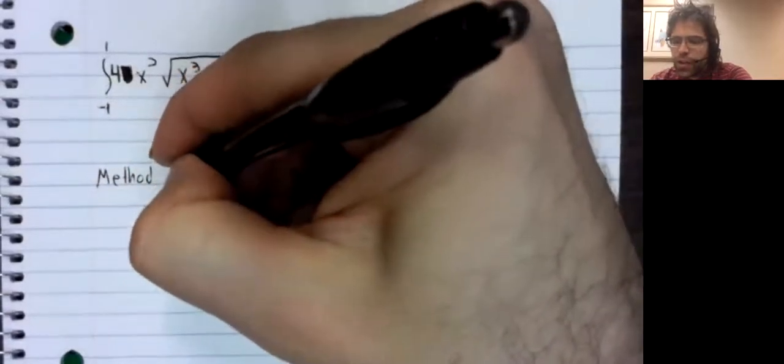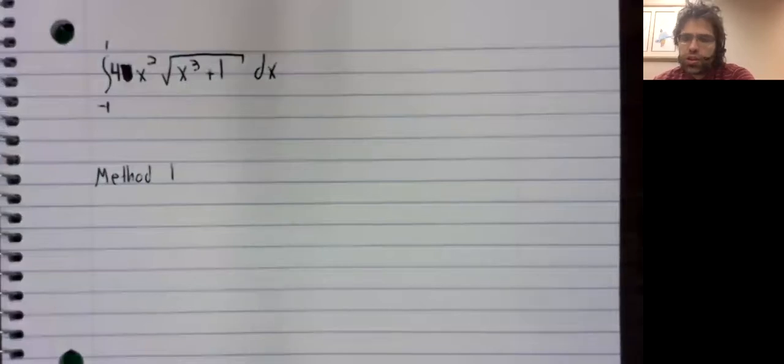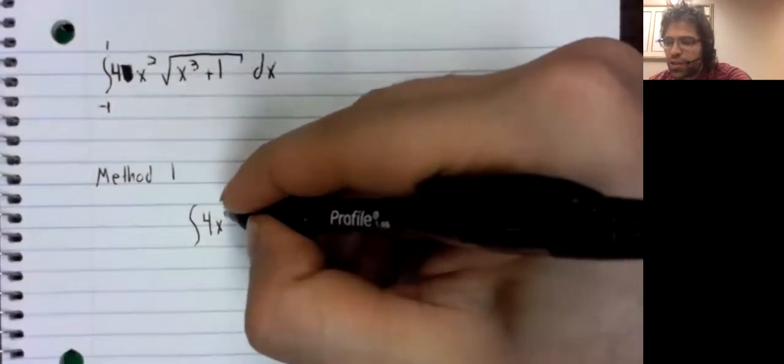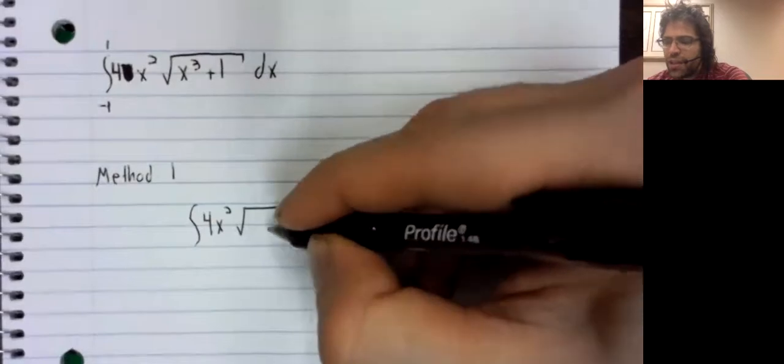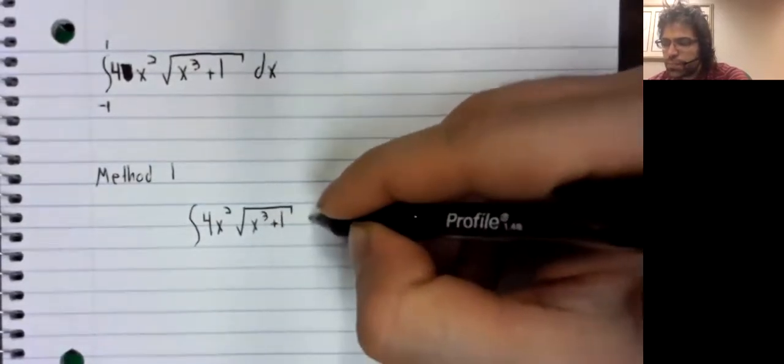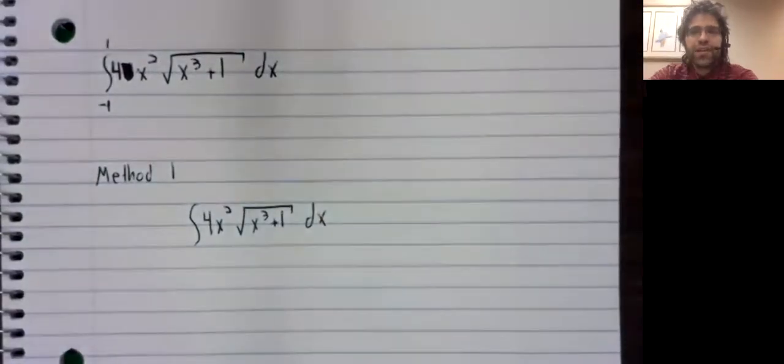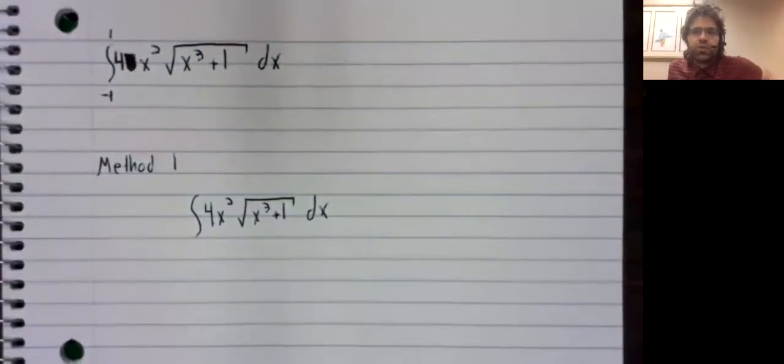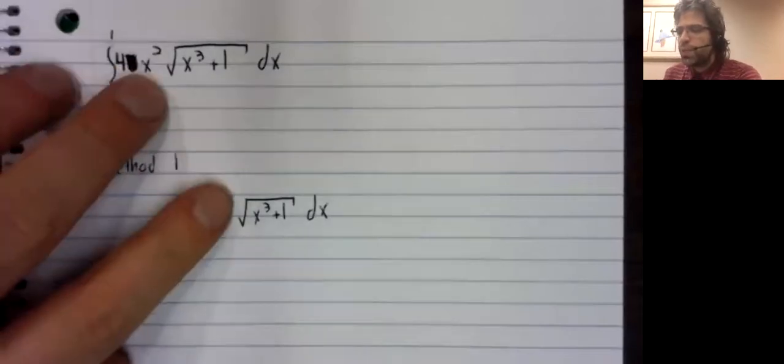Method one is to ignore the limits of integration for now and simply try to take the indefinite integral. Given the context of this video, clearly we're going to be able to use u-substitution to solve this problem. But it's always useful to pause and think why we're doing something. Remember that u-substitution is a technique for when you have composition. We do have composition, x cubed plus one composed with the square root.